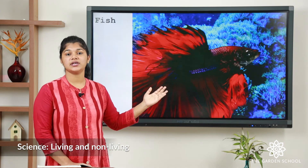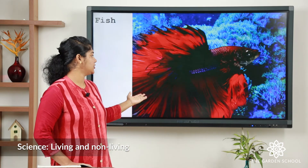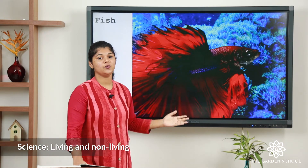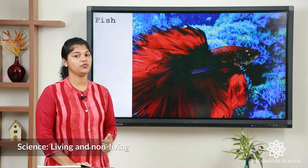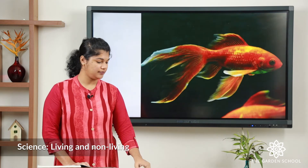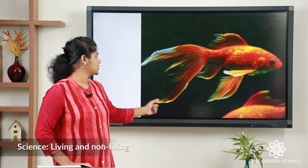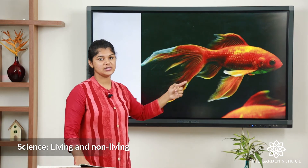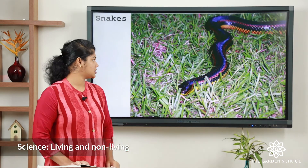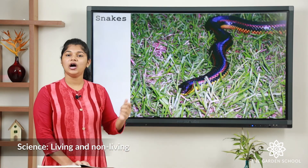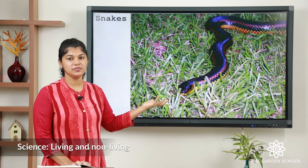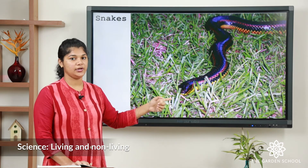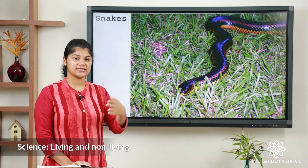The next category is fish. You can see the fish have colorful fins. With the help of the fins they move from one place to another. How about snakes? They do not have limbs, but they move with their body from one place to another by sliding.